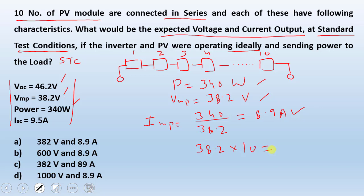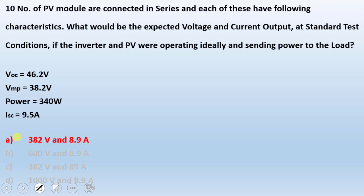So our answer to this question is that the voltage of the system is 382 volts and current 8.9 amperes, which is the first choice here. Our best answer is here.